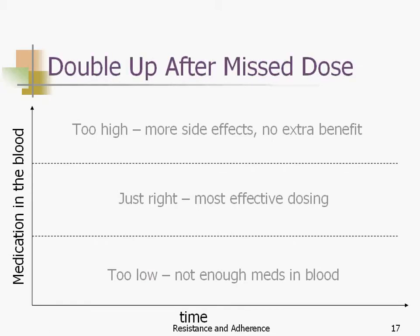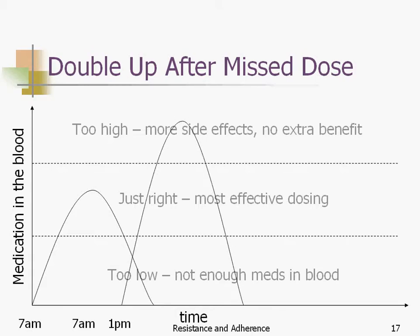Something a lot of people think they should do — and this works for some meds but not for HIV meds — is double up after a missed dose. If someone takes a dose at 7am as scheduled, forgets the next 7am, remembers at 1pm and takes two just to cover their bases, what actually happens is it shoots right up into the too-high zone, where you get extra side effects but no extra benefit. In the case of a missed dose, just take the next dose as soon as you remember, try to keep that window as small as possible, and get back on a schedule that works.